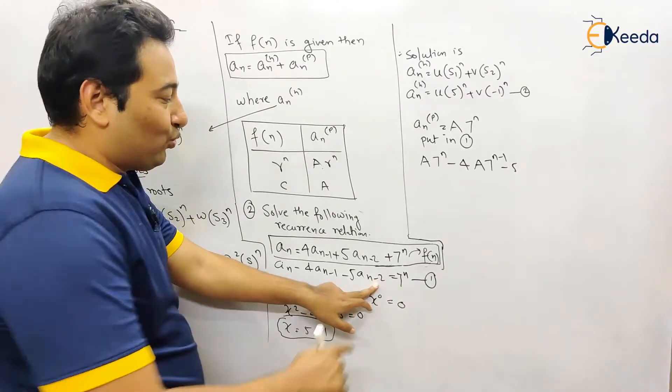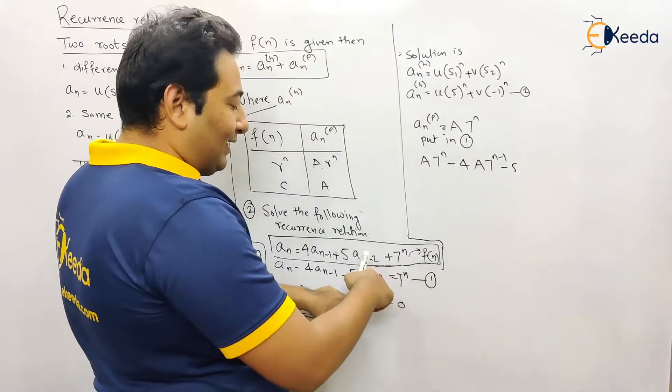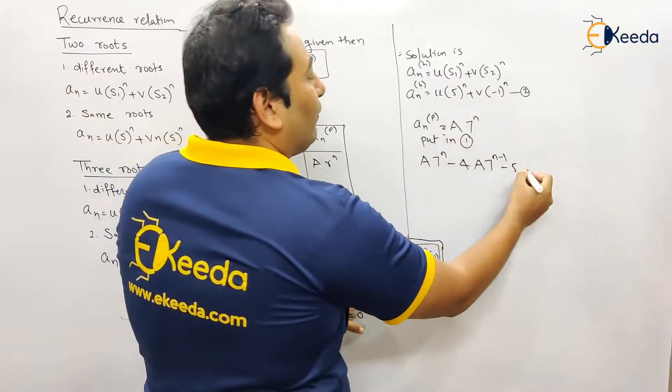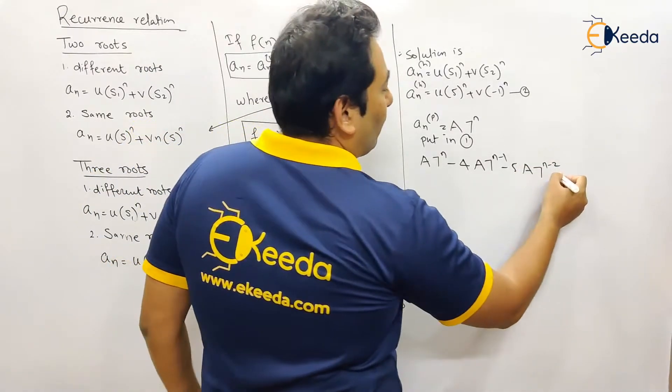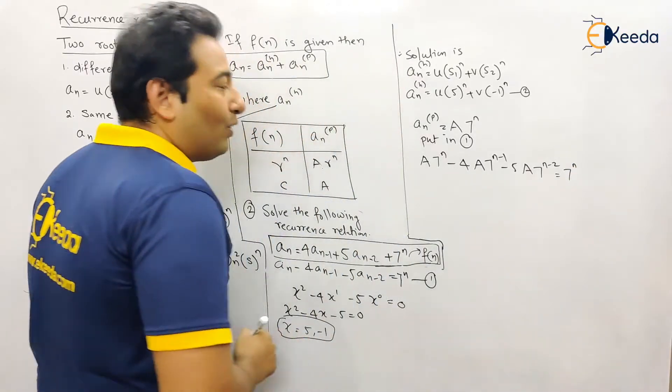Minus five a_n minus two. So a_n is a·seven raised to n. Here it is n minus two, so it will be a·seven raised to n minus two, equal to right hand side seven raised to n.